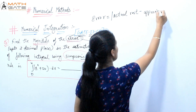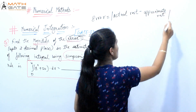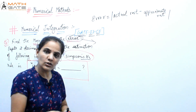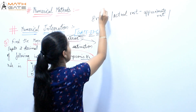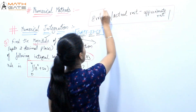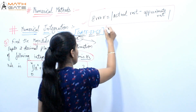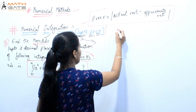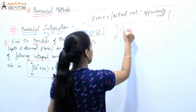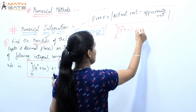The actual root is obtained by directly solving the integral analytically, and the approximate root is obtained using the given numerical method. So first, let's find the actual root — that means integrating from 0 to 4: x⁴ + 10 dx.